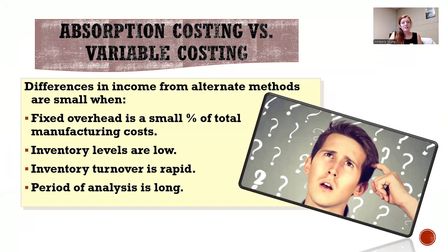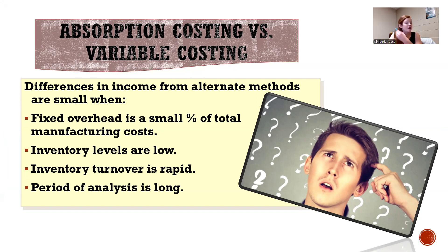The big difference matters when fixed overhead is a large percentage of manufacturing cost. Fixed overhead would include things like your factory rent, factory depreciation, and insurance. But if that's a small percentage of all your costs, it wouldn't make a huge difference between absorption and variable costing.